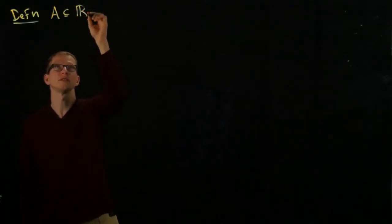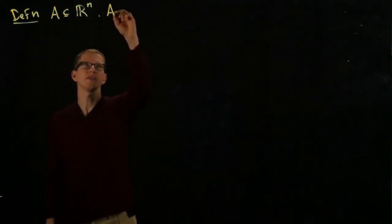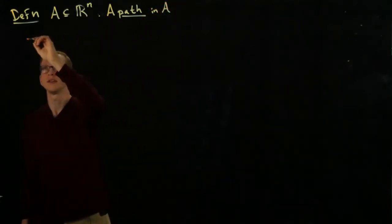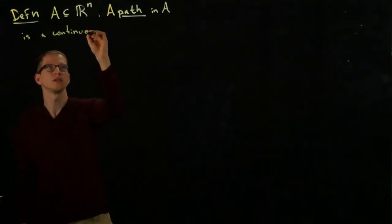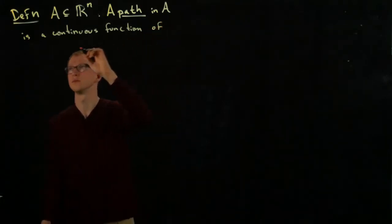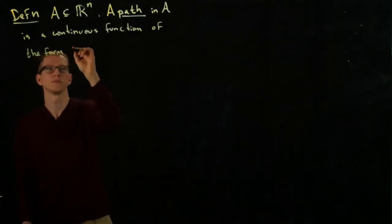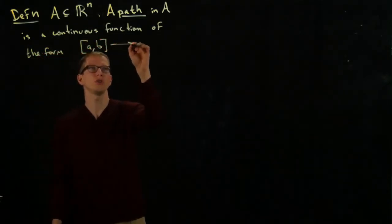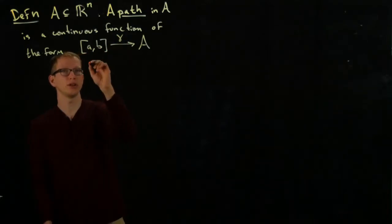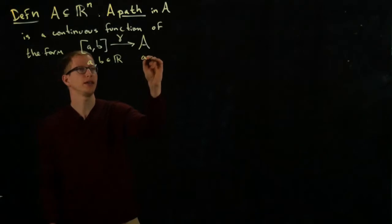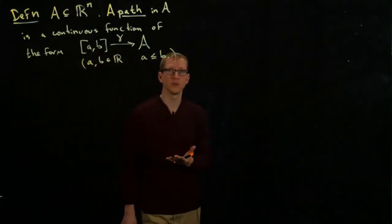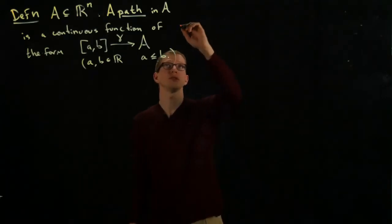So let A be a subset of Rn. A path in A is a continuous function of the form - it's a function defined on a closed interval into A. So here A and B are numbers, and A is less than or equal to B. This is what the definition of a path is, and it's very geometrically intuitive.